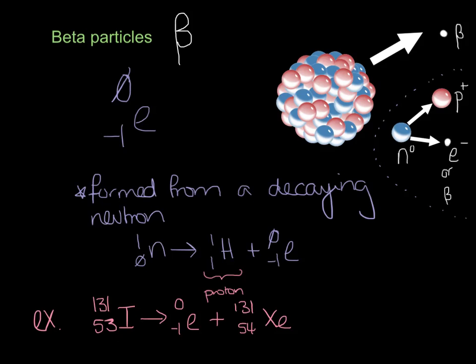And the example I have here is iodine-131, and it undergoes a beta particle decay and forms xenon. Now, the interesting thing about emitting a beta particle is that since you've changed one of the neutrons into a proton, our atomic mass goes from 53 to 54, so it actually increases by 1.